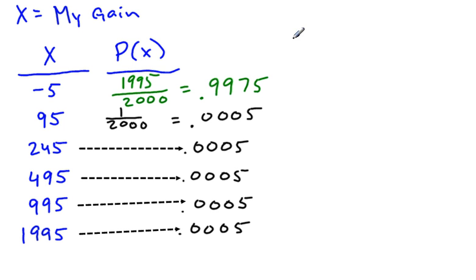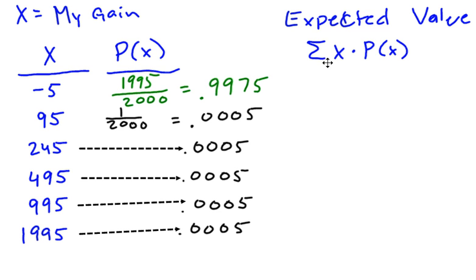What I now need to do is find my expected value. In order to do that, I have to take each random variable, multiply it by its corresponding probability, and then find the sum of all of those products. Well, I've done the math beforehand, and negative 5 times 0.9975 is equal to negative 4.9875.